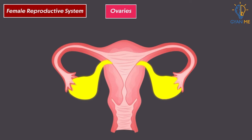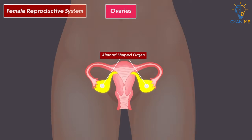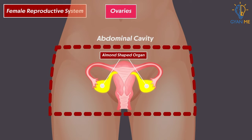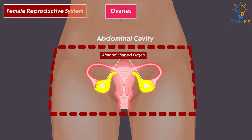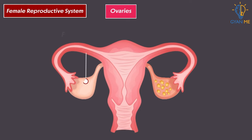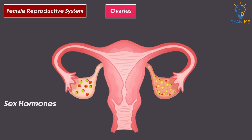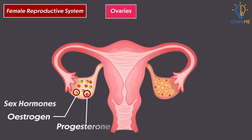Ovaries are a pair of almond-shaped organs located in the lower part of the abdominal cavity near the kidneys in females. Ovaries are the female gonads which produce female gametes — eggs or ova — and also secrete sex hormones oestrogen and progesterone.